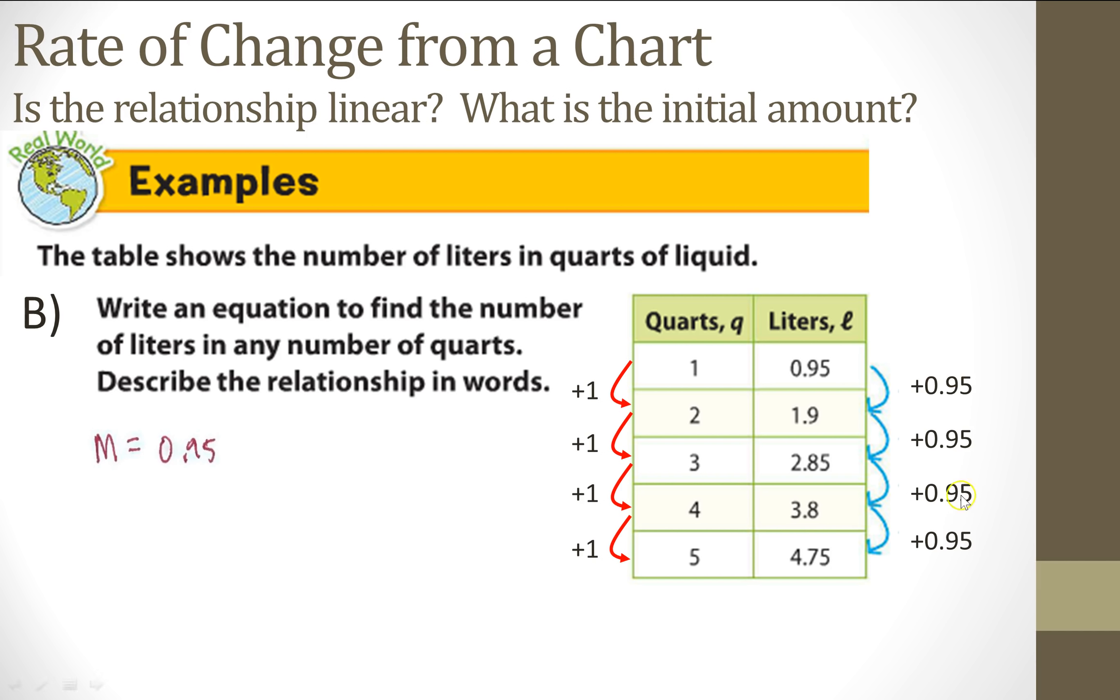So that means I know that my rate of change is 0.95. The change in the right hand side, the liters, divided by the change in the left hand side, the quarters, or the Y, the X and the Y. So now that I have that, I can actually work backwards. Because I see that the rate of change is 0.95, and I'm adding each time to go back up to the initial amount to find out zero, I'm going to subtract 0.95. And 0.95 minus 0.95 is zero. And that's why I know my B is equal to zero.